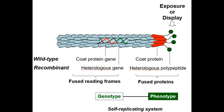We begin by describing what a phage is. A phage is a virus of a bacterium, composed of a few simple units, and may be of multiple types: filamentous, tailed, or polyhedral.